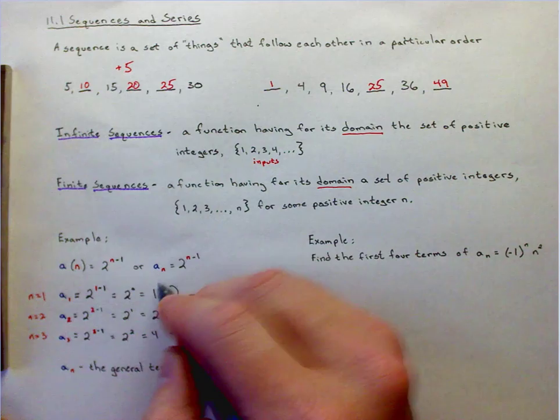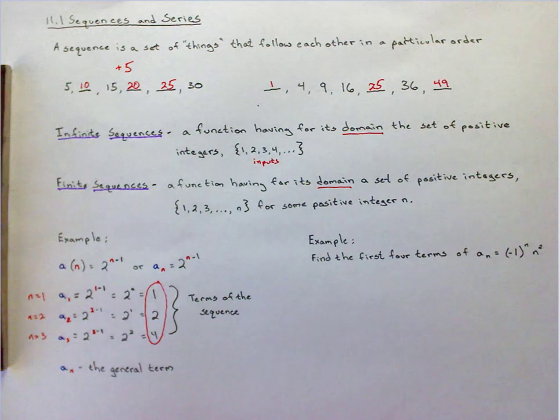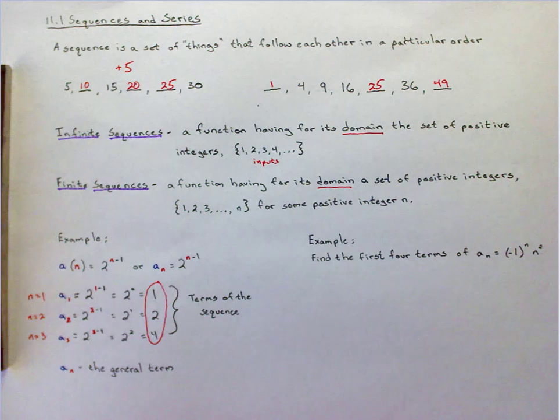And these right here, we call them the terms of the sequence. Those are the terms of the sequence. And a to the n is known as the general term.